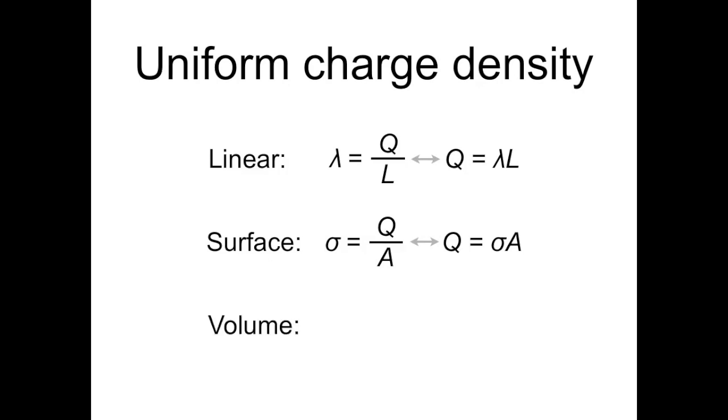So now let's summarize these equations for uniform charge density. In the one-dimensional or linear case, charge density lambda equals charge over length, that is q over L. This is equivalent to saying that q equals lambda L. In the two-dimensional case of surfaces, charge density sigma equals q over A, or area, so q equals sigma A. And in three-dimensions, we're working with volumes, so volume charge density rho is q over V, or volume, meaning q equals rho V.